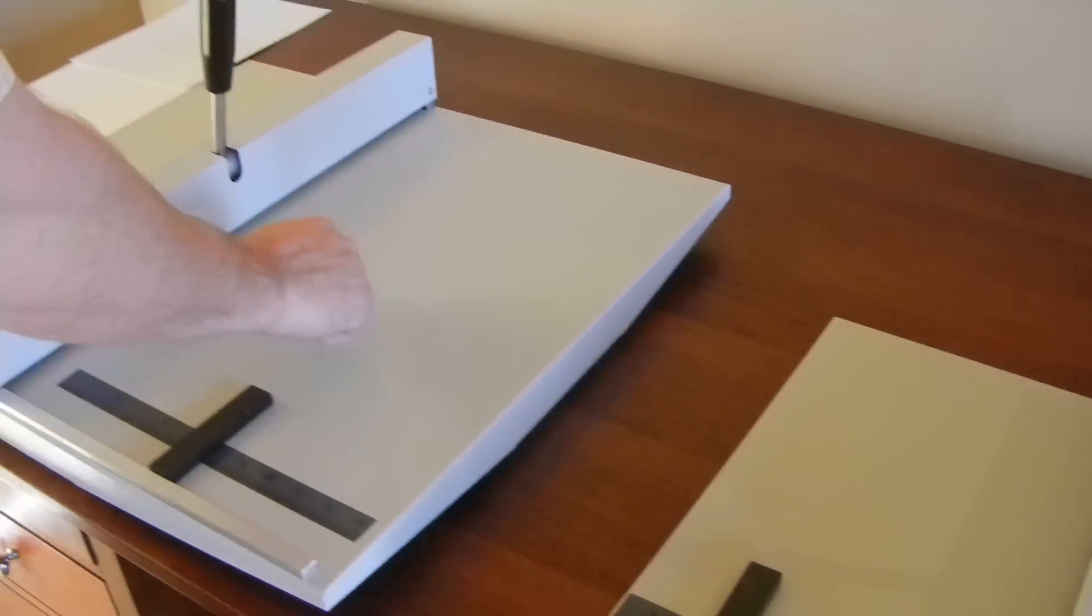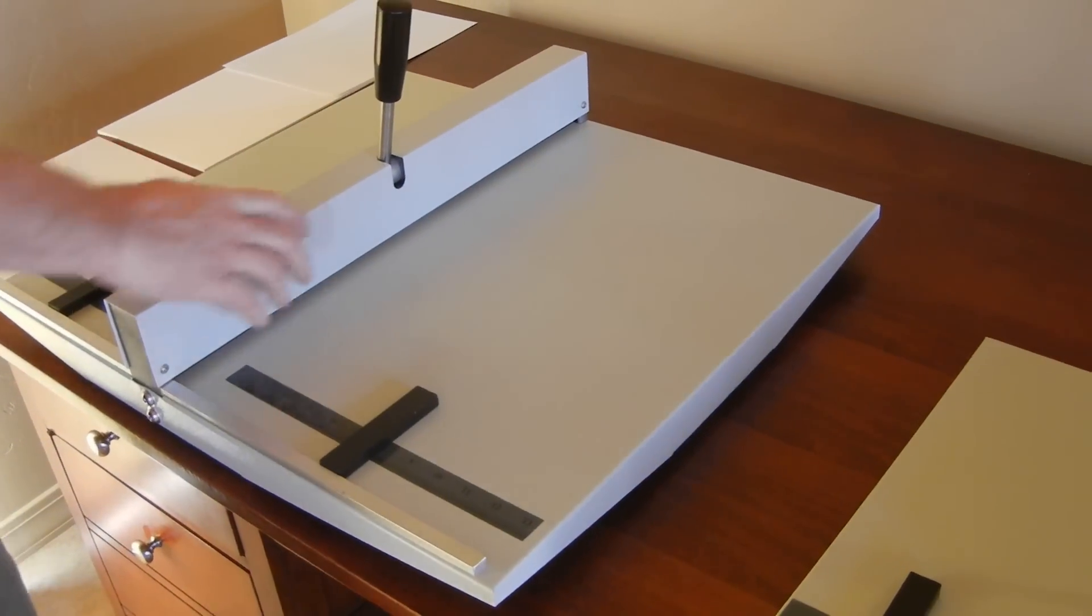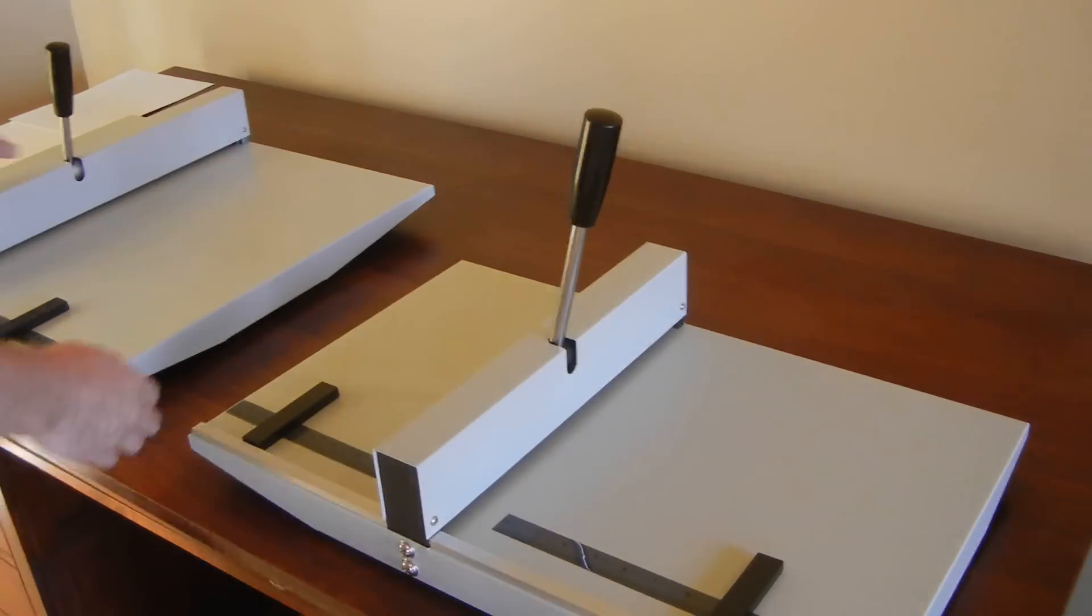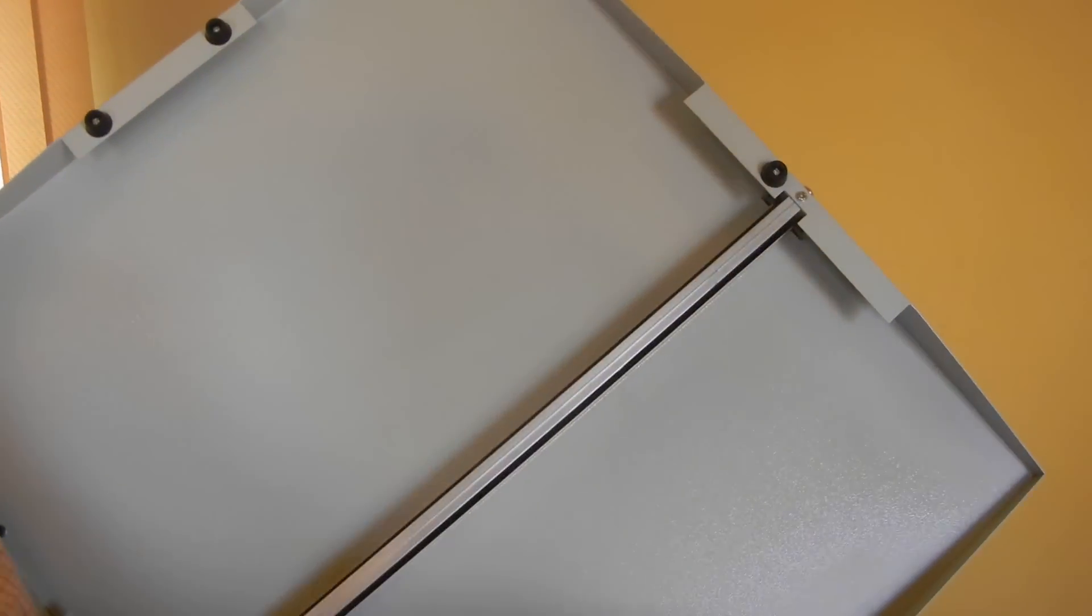They're both made out of metal, so they're very high quality machines. The only plastic you're going to find on them is this black handle and the rubber feet on the bottom. That would be the only thing that's not metal on these.